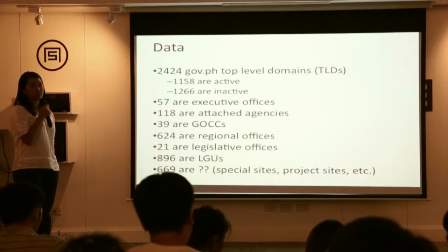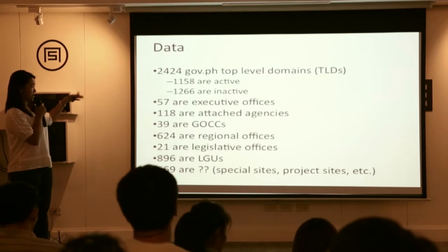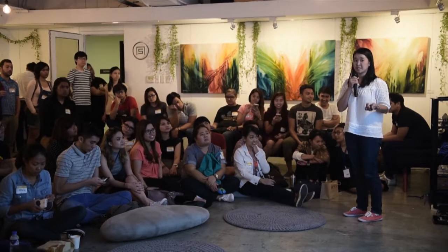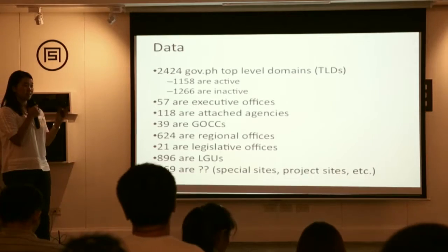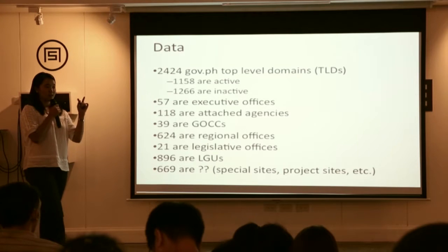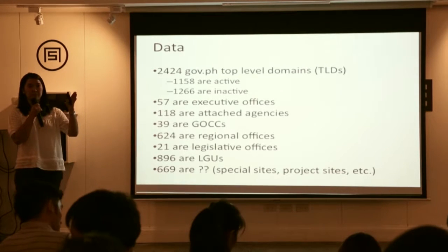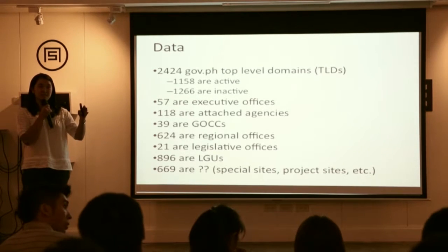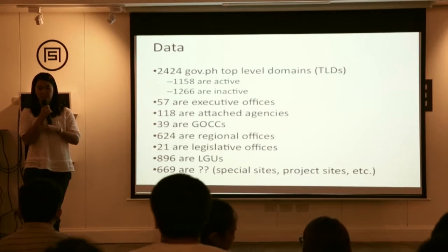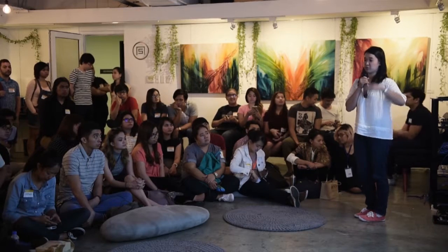I had to sort out which of these are active, inactive, and still in use — and which are direct gov.ph domains or not. By direct gov.ph, I mean top-level domains. For example, dfa.gov.ph is a top-level domain. And usa.dfa.gov.ph is a second-level domain. You can go further to third and fourth level domains.